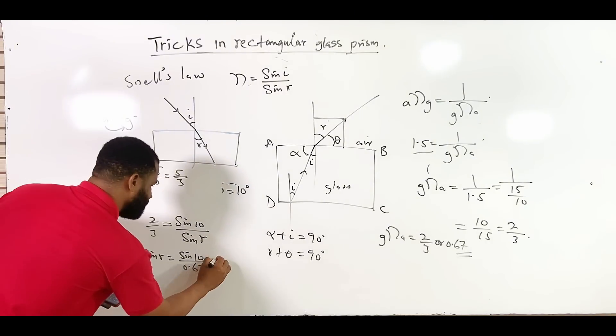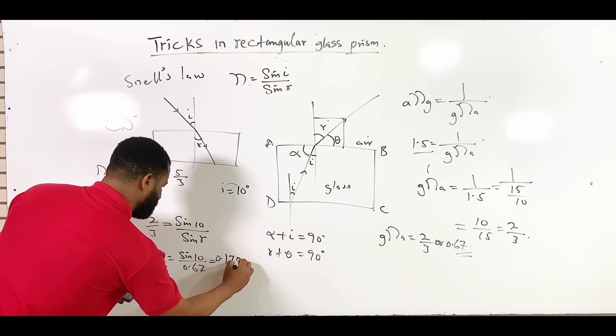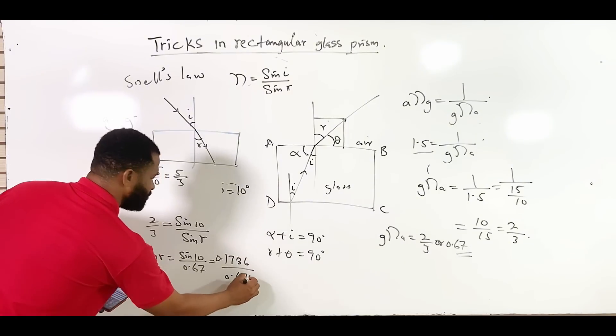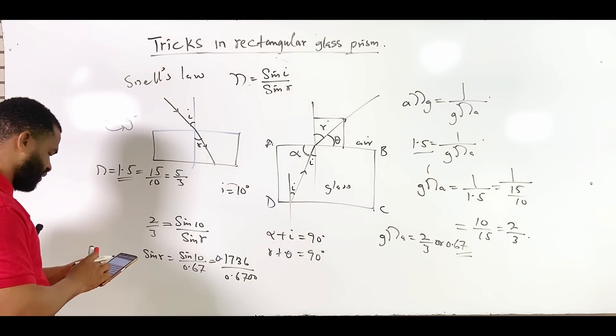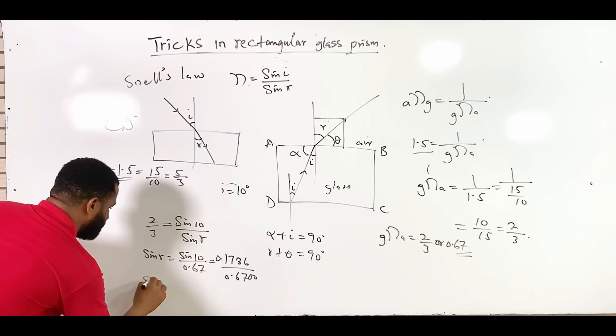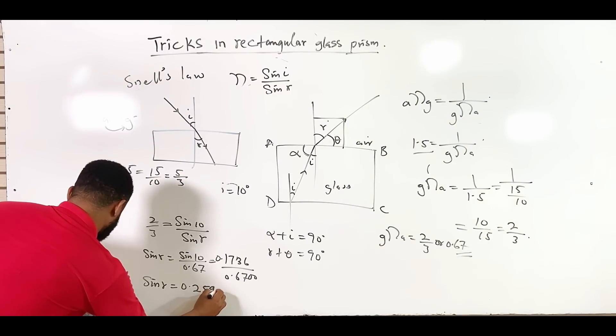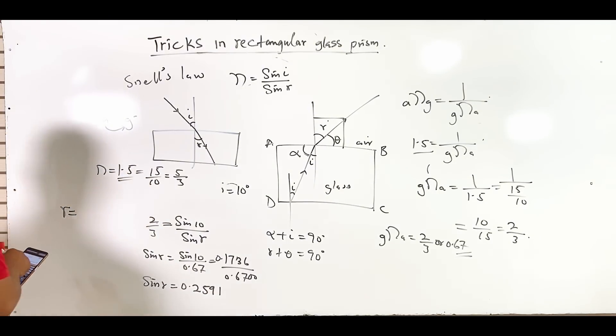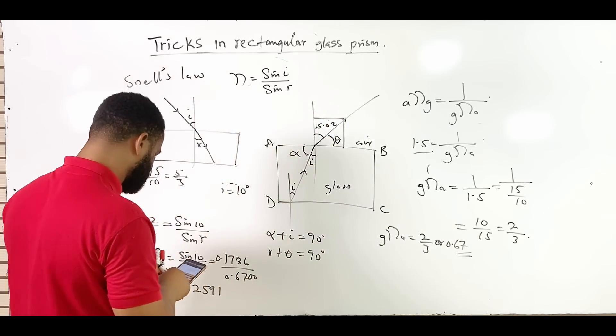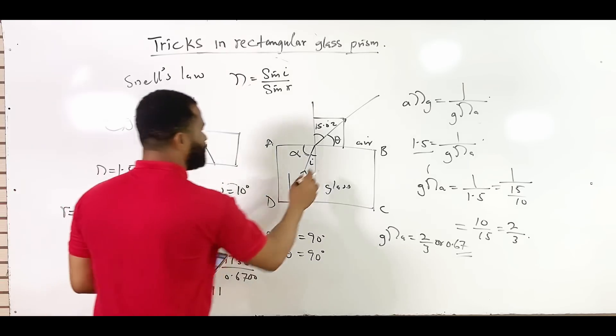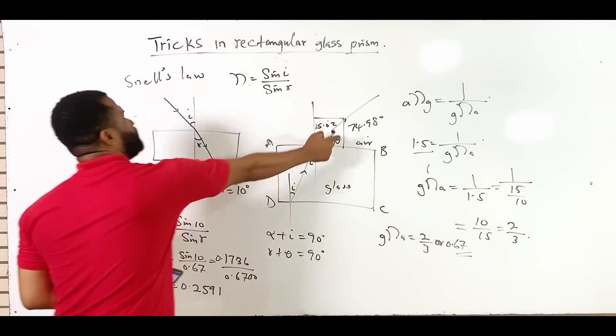Sine 10 is 0.1736 all over 0.6700. This is divided by 0.1736 divided by 0.6700. So we see that sine of r is equal to 0.2591. Therefore, refractive index r is going to be sine inverse of 0.2591, which is 15.02 degrees. So if you go here and put 15.02, therefore 90 minus 15.02, we are having 74.98. So you have this angle at that point.